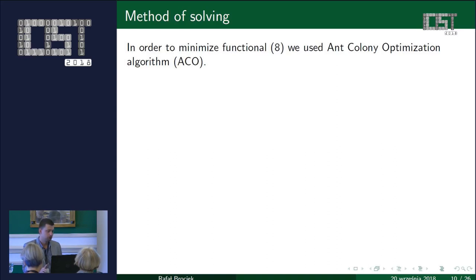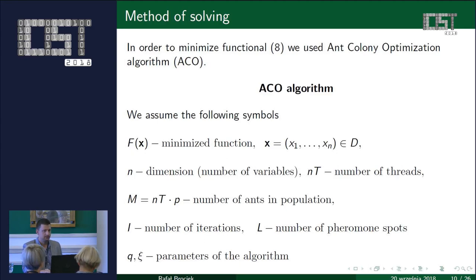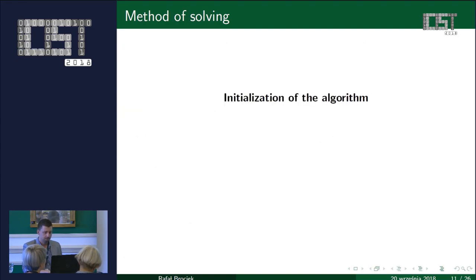Let me briefly show you how the algorithm works. Using the following symbols: F is the minimized function, N is the dimension — the number of parameters, which in our case is 4 (A1, A2, A3, A4); NT is the number of threads since the algorithm is adapted to multi-thread computation; M is the number of ants; I is the number of iterations; and L is the number of pheromone spots.